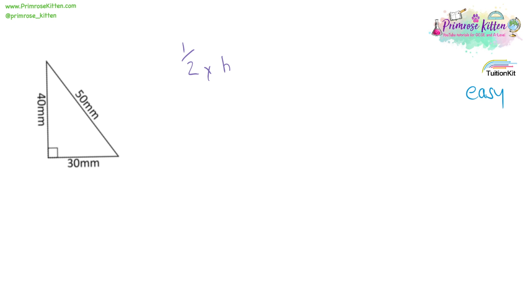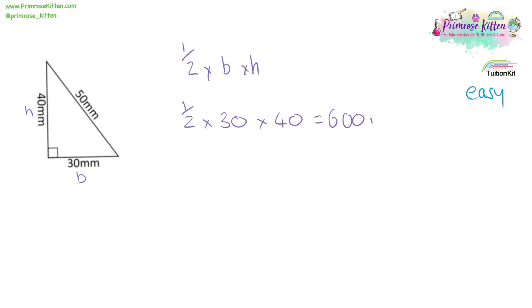Again, we're going to use half times base times height. This is our base and here is our height. A half times 30 times 40 will give us 600 millimetres squared.